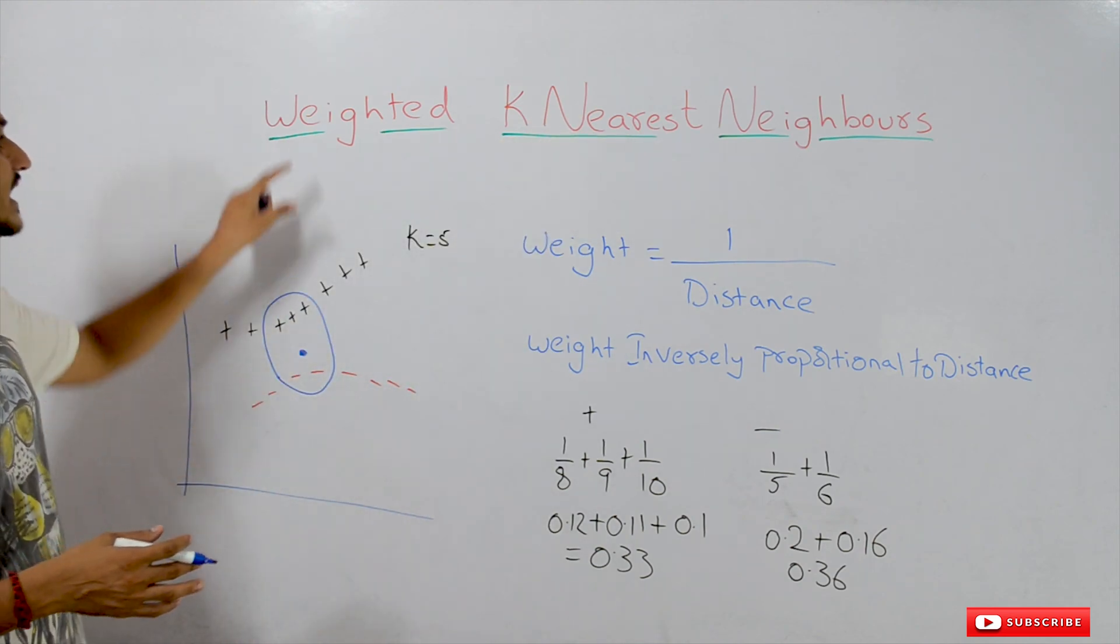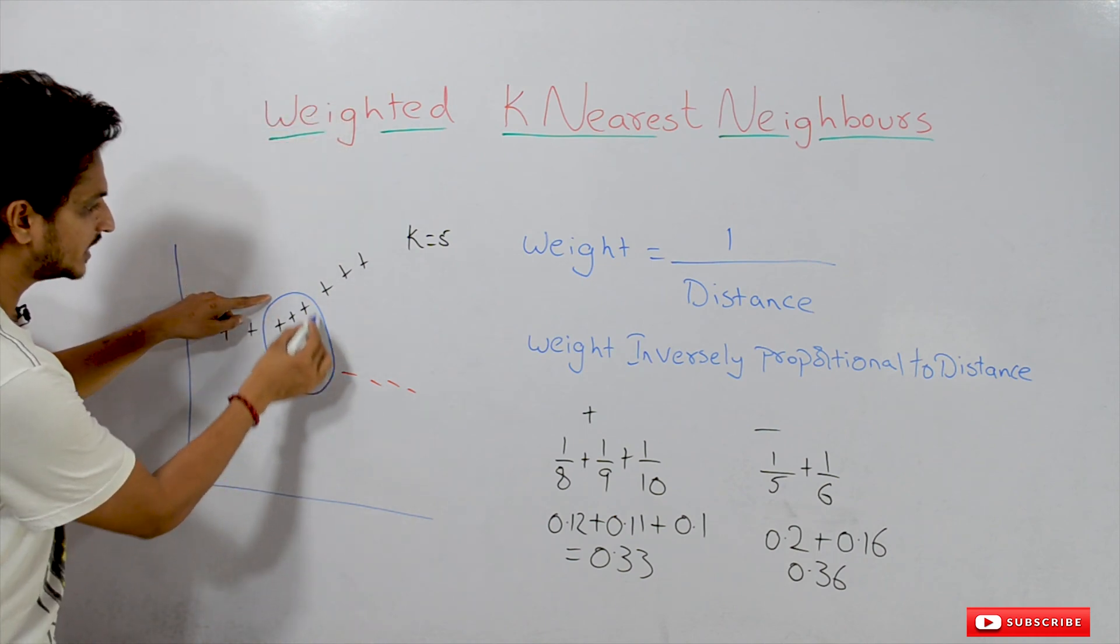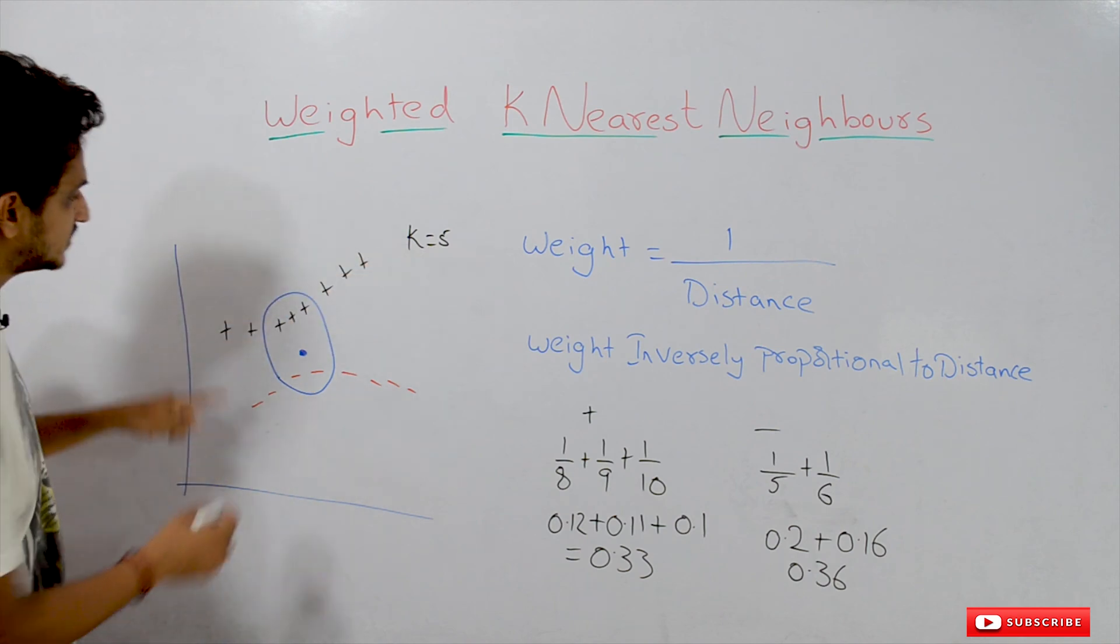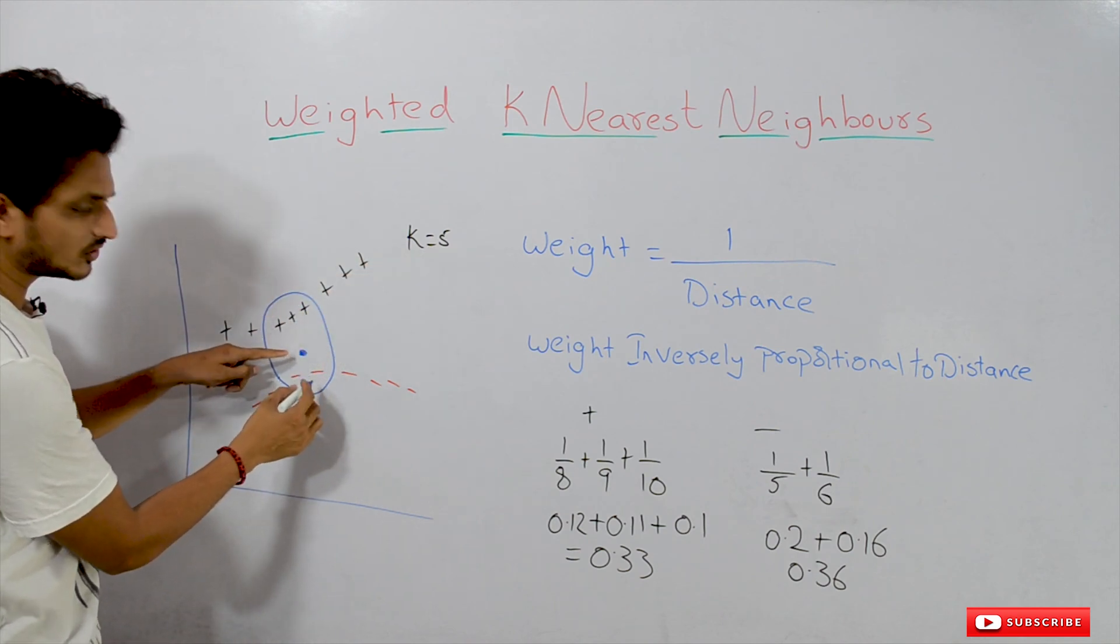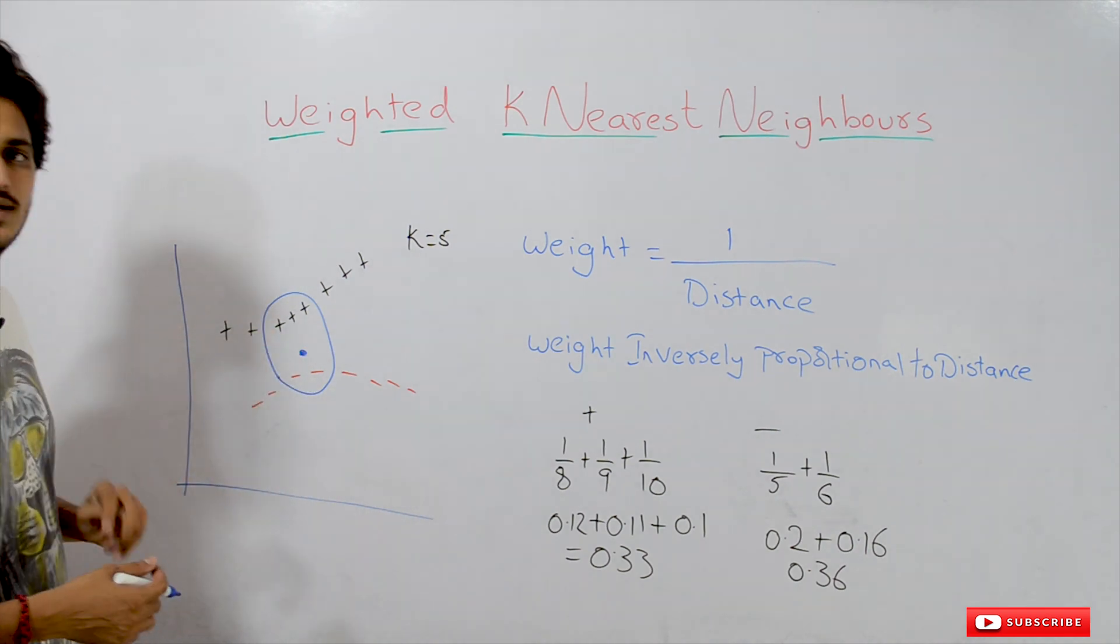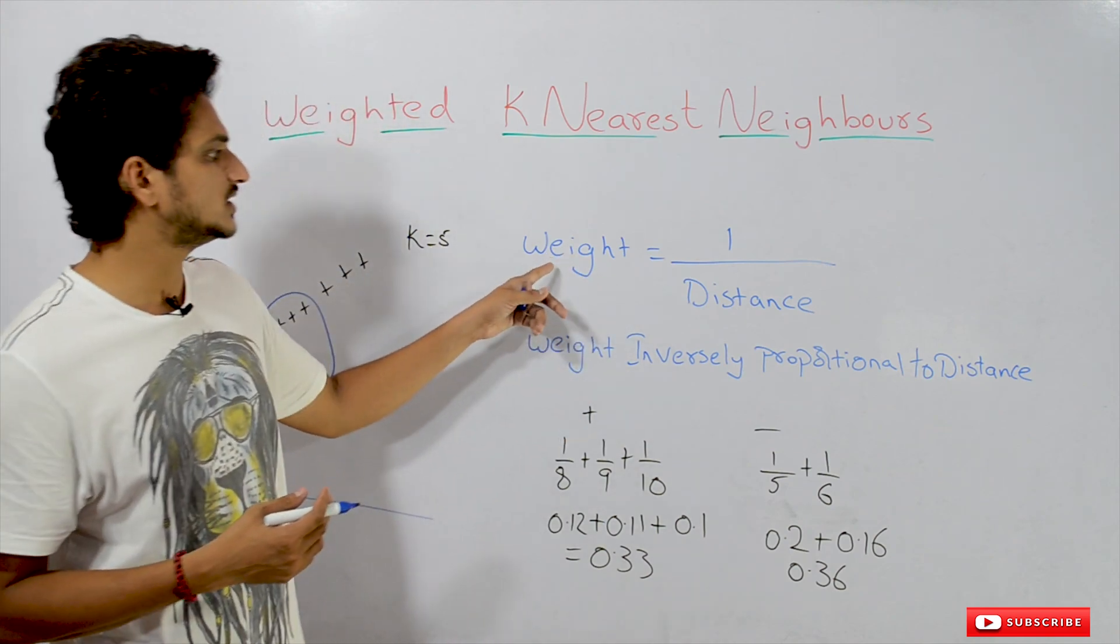How it works is it will identify weights for each and every point in our nearest neighbors. We have identified 5 nearest neighbors. From these 5 nearest neighbors, we are having 3 positive and 2 negative. We have to identify weights for all these 5 data points. How are weights identified?